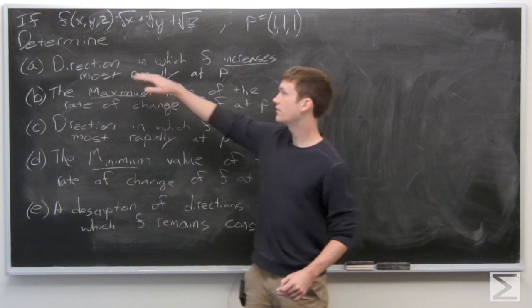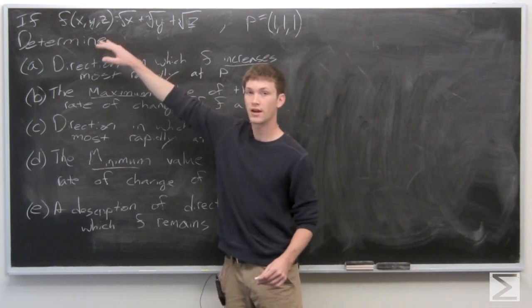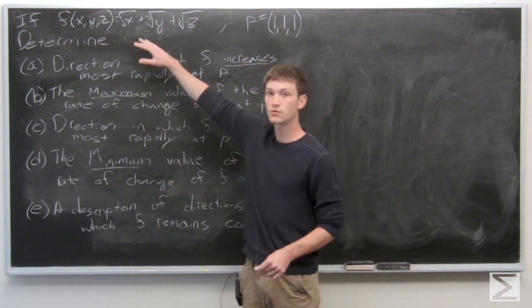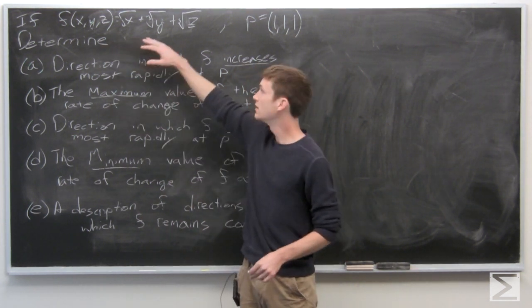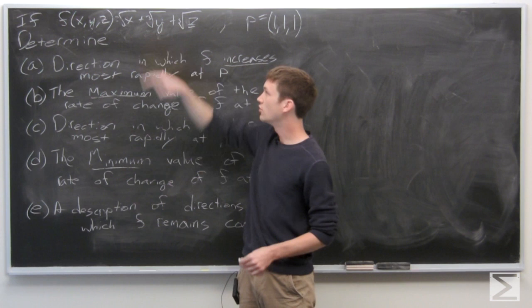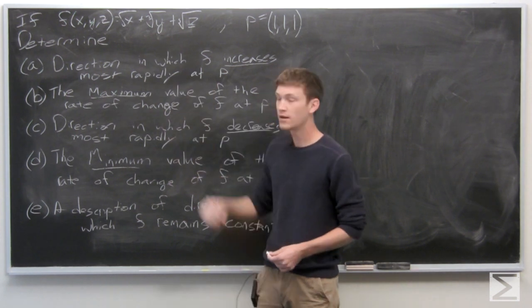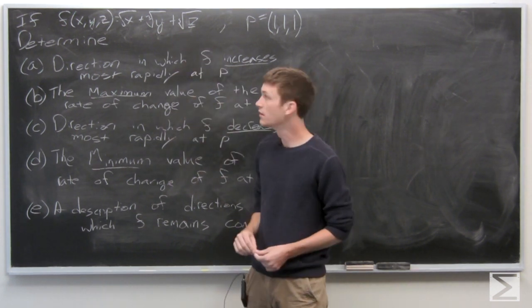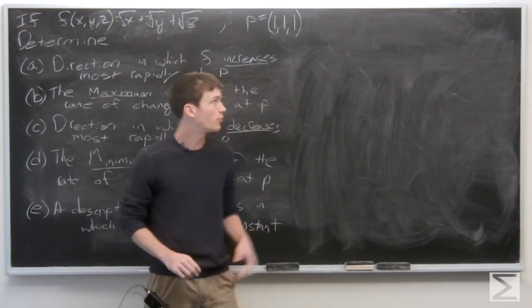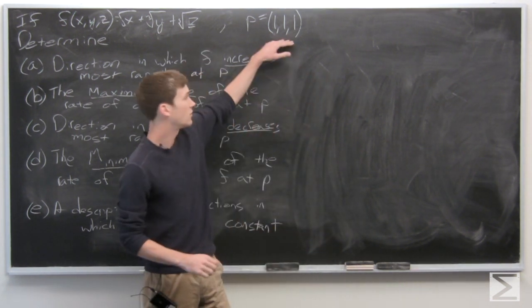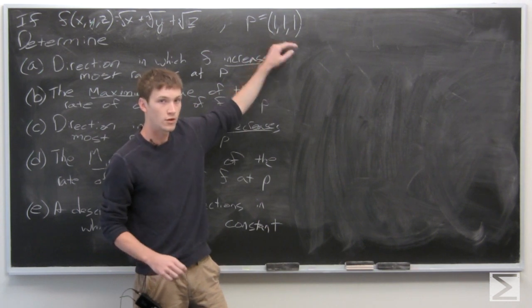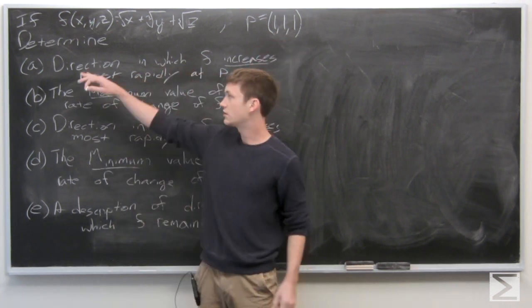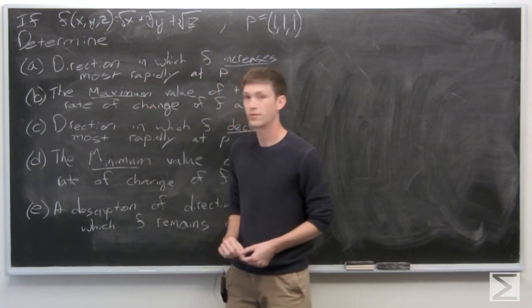In this problem we're given a function f(x, y, z) equals the square root of x plus the cube root of y plus the fifth root of z, and a point p equals (1, 1, 1). We're asked to determine the following.